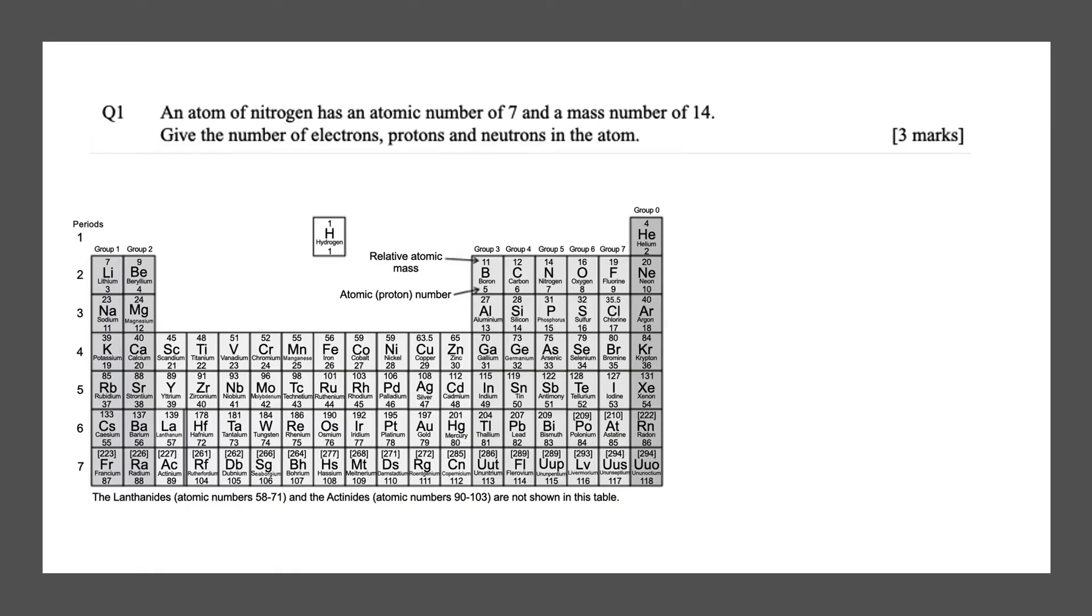Our first exam question states: an atom of nitrogen has an atomic number of 7 and a mass number of 14. Give the number of protons, electrons and neutrons in this atom. This question is worth 3 marks. So let's find nitrogen on the periodic table. It's over here. The atomic number is 7 and the mass number is 14. I've put the periodic table on here because in an exam you will always be given a periodic table.